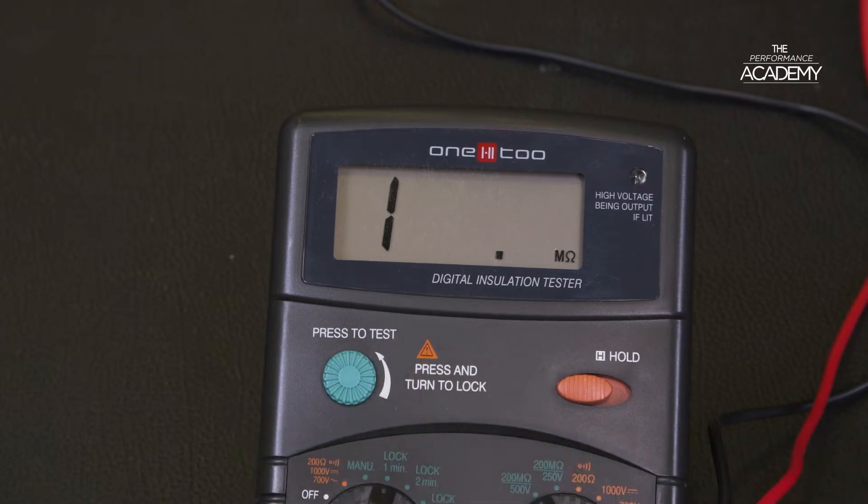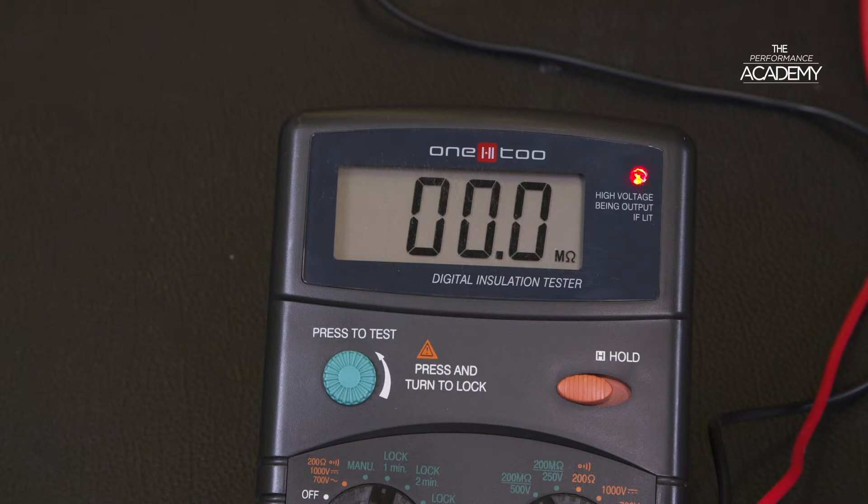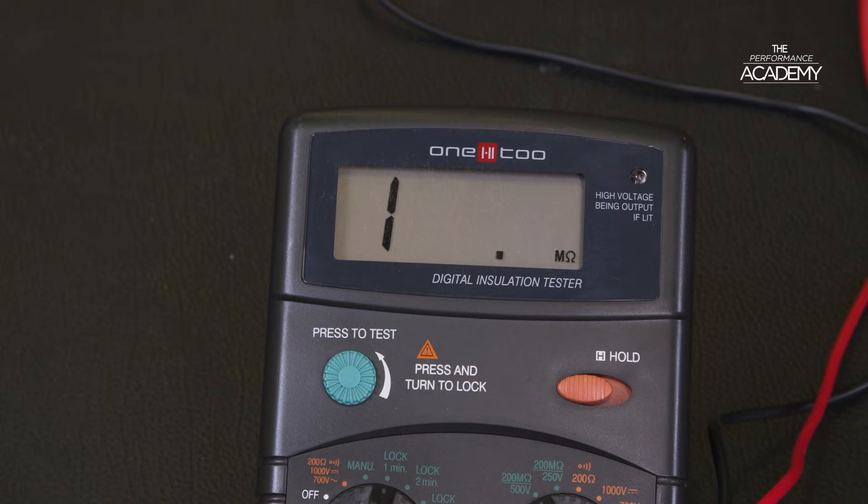You will notice that on activation of the insulation test the tester bleeps in sequence with a flashing red LED. Each bleep and flash represents a pulse of electricity which builds up the voltage over a few seconds from 50 or 100 volts up to the selected test maximum. For our purposes 500 volts. It's not a constant output.